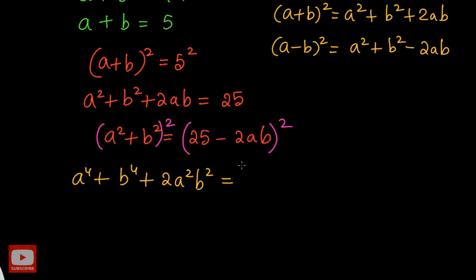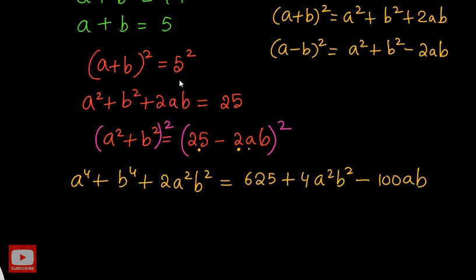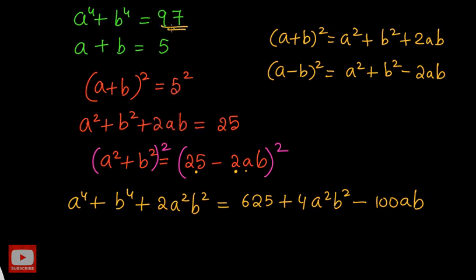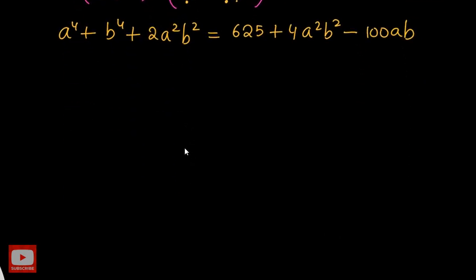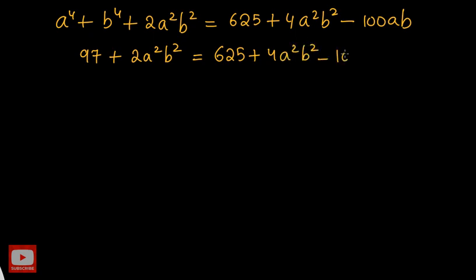On the right-hand side, a² is 25, so its square is 625, plus the square of the second term — 2 squared is 4 and squaring ab gives a²b² — minus 2 times 2 times 25 times ab, which gives minus 100ab. Now we already know the value of a⁴ plus b⁴ — it is 97. So we substitute a⁴ + b⁴ as 97 here, giving 97 plus 2a²b² equal to 625 plus 4a²b² minus 100ab.